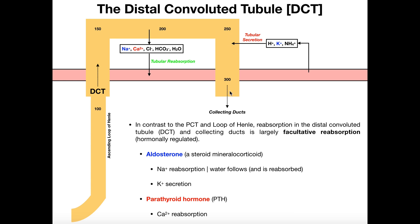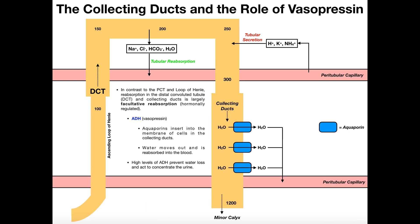That stuff will eventually go into the collecting duct. In the collecting ducts, the major thing happening is more water reabsorption - this is really the major site of water reabsorption. If you need to concentrate the urine more, meaning you need to get more water back into the blood when your fluid volume is low, you need to get that water especially from the collecting ducts. We have facultative reabsorption here, and the major hormone acting at the collecting ducts is antidiuretic hormone or ADH.